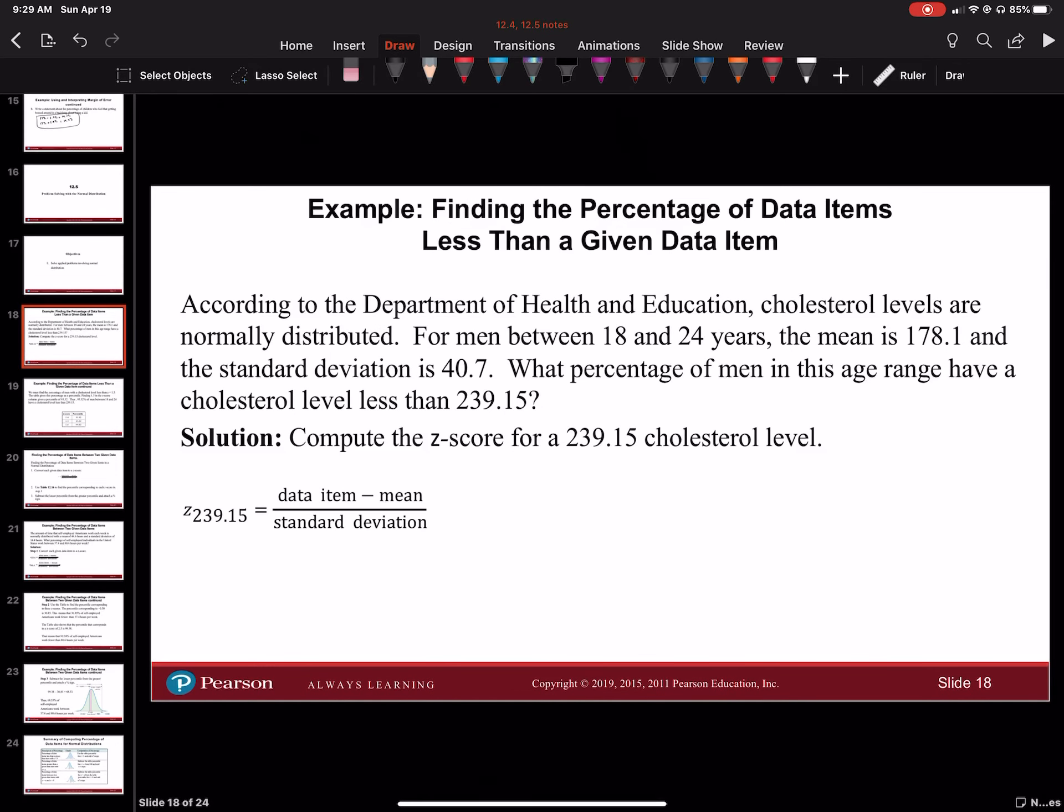For our first example, according to the Department of Health and Education, cholesterol levels are normally distributed for men between 18 and 24 years. The mean is 178.1, and the standard deviation is 40.7. What percentage of men in this age range have a cholesterol level less than 239.15?